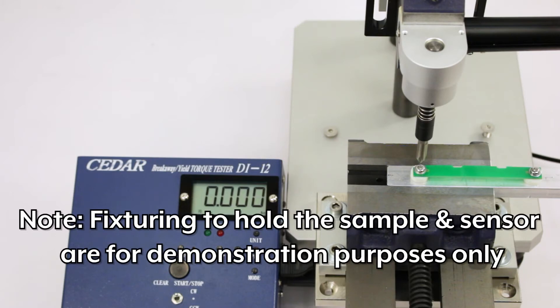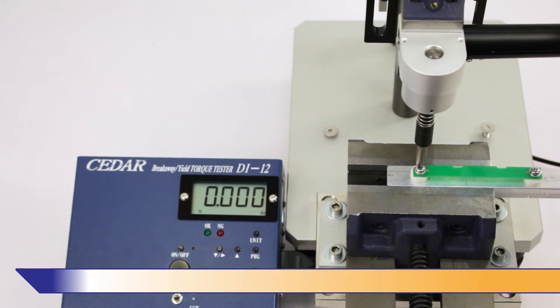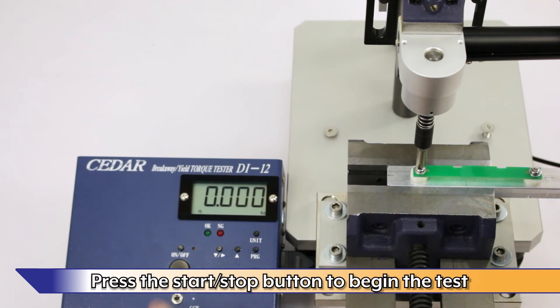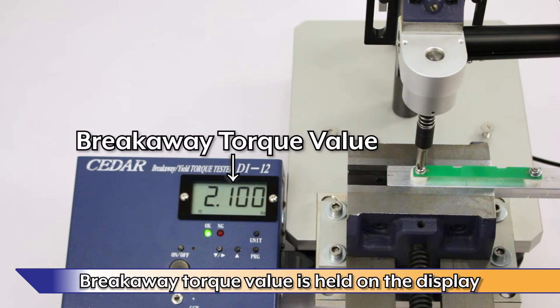Note, fixturing to hold the sample and sensor are for demonstration purposes only. Engage the sensor and fastener. Press the Start-Stop button to begin the test. Since the fastener is already tightened, the tester will instantly detect breakaway torque and stop. The breakaway torque value is held on the display.